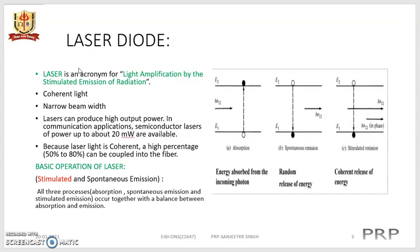A brief discussion about the laser: laser is actually an acronym for Light Amplification by Stimulated Emission of Radiation, where a coherent light is generated with a narrow beam width. Lasers can produce high output power — in communication applications, semiconductor lasers of power up to 20 milliwatts are available. Because of the coherent nature of laser light, a high percentage — say 50 to 80 percent — of the radiated light can be coupled into optical fiber.